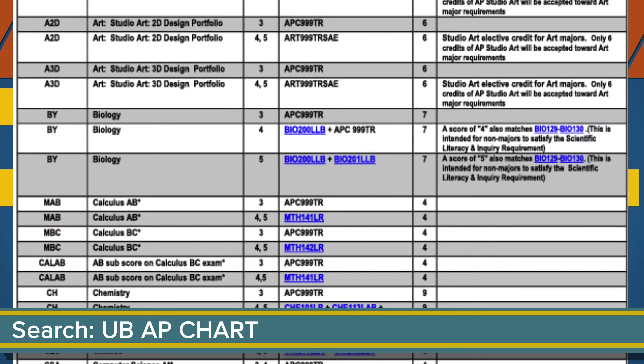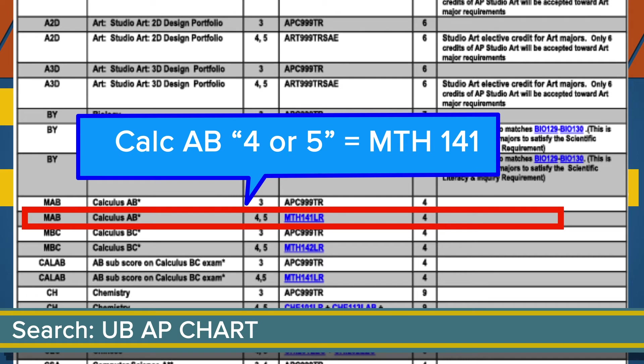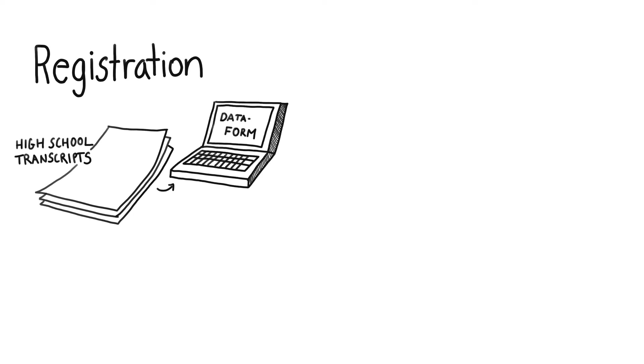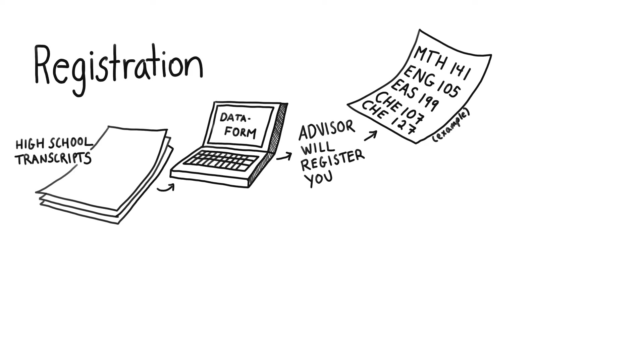And here's Calculus AB, where receiving a 4 or 5 is equal to our Calculus 1, which is Math 141 — the first calculus course taken by Engineering students and Computer Science BS students. As far as registration, based on your high school transcripts and completing the data form, an academic advisor will register you in two classes.